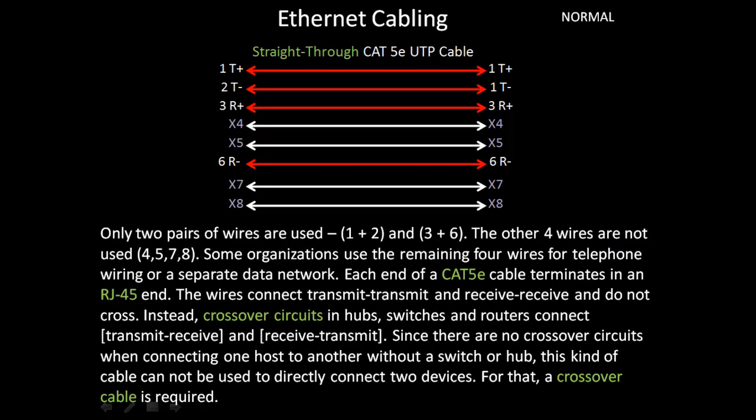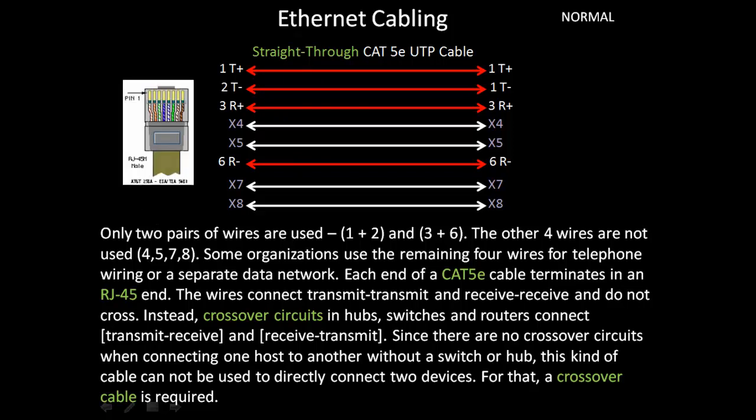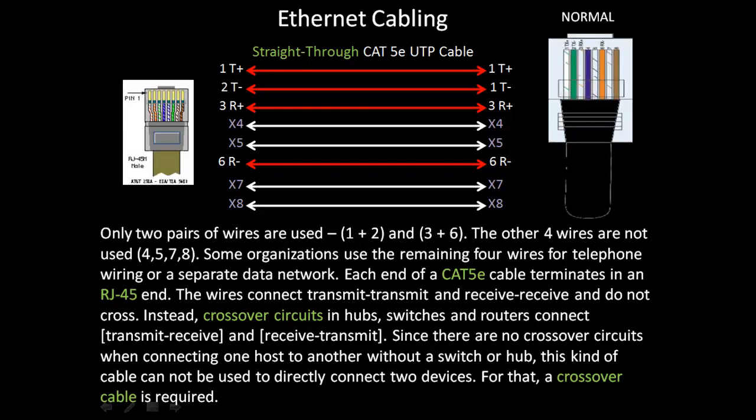Let's look at different types of Ethernet cabling. The first example is a straight-through Category 5e unshielded twisted pair cable. Only two pairs of wires are used: 1 and 2, and 3 and 6. The other four wires — 4, 5, 7, and 8 — are not used. DC current and a flow of electrons passes down each of the four wires. The transmit has both a positive and negative, and receive has both a positive and negative, just like any DC circuit.